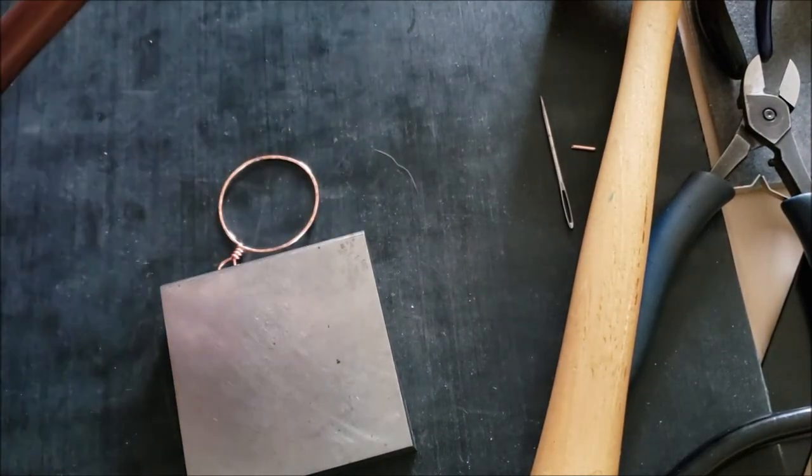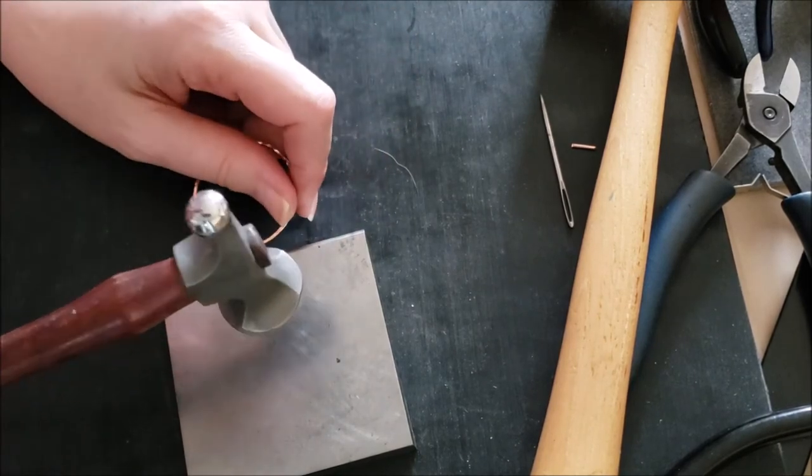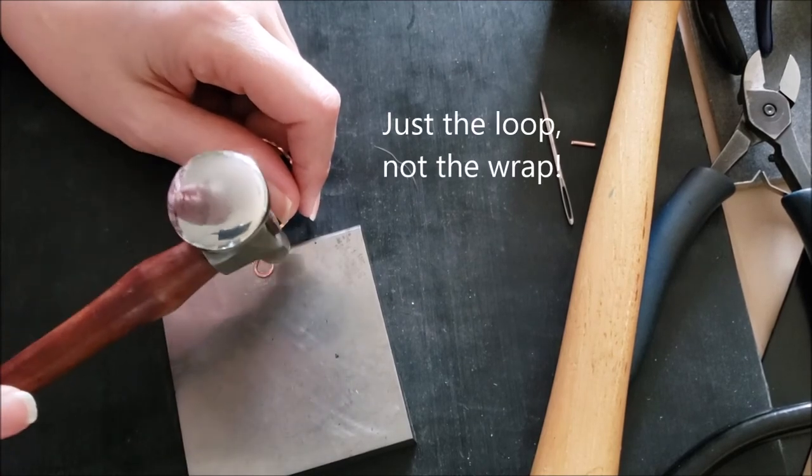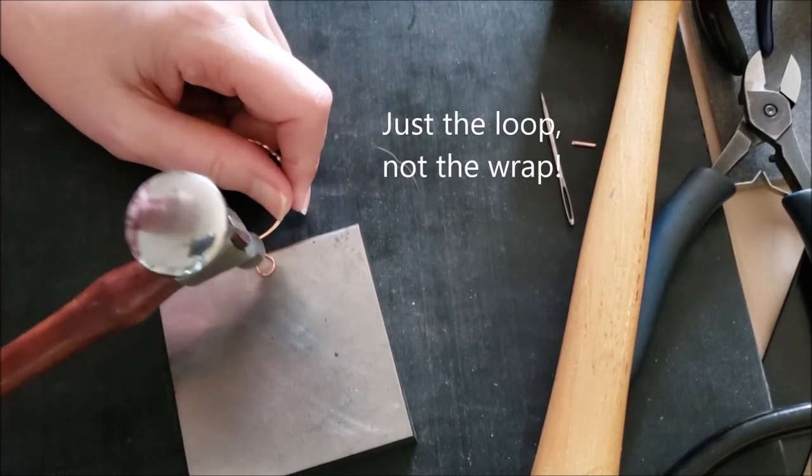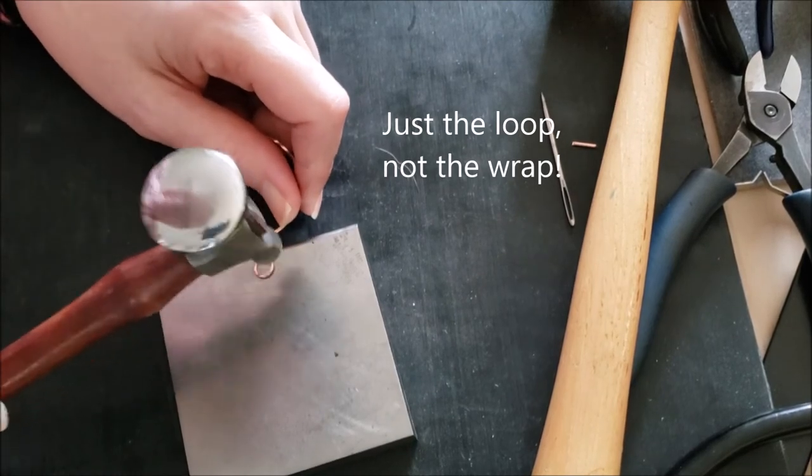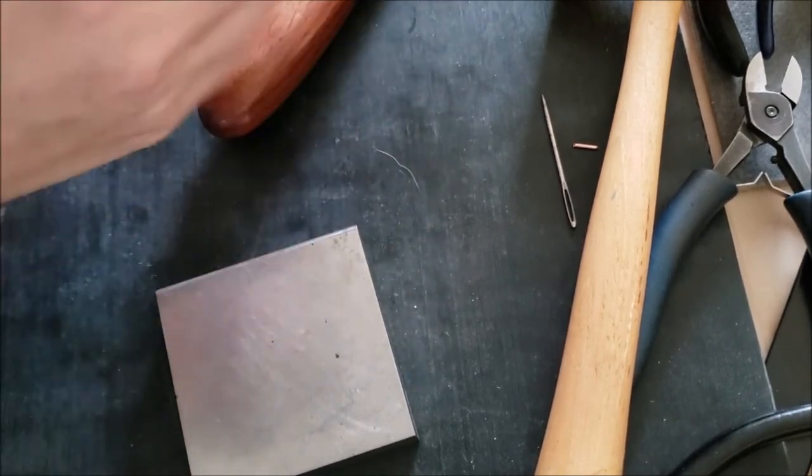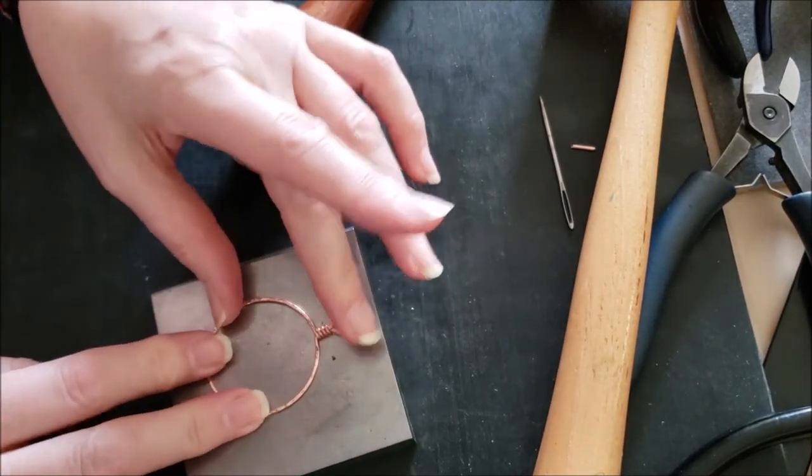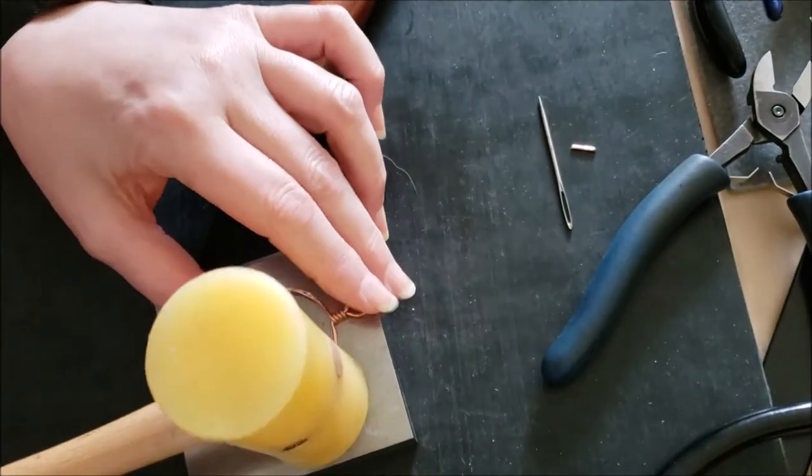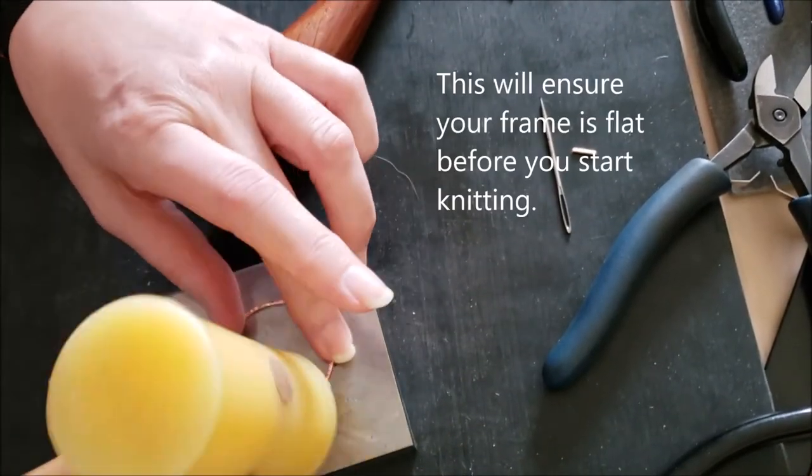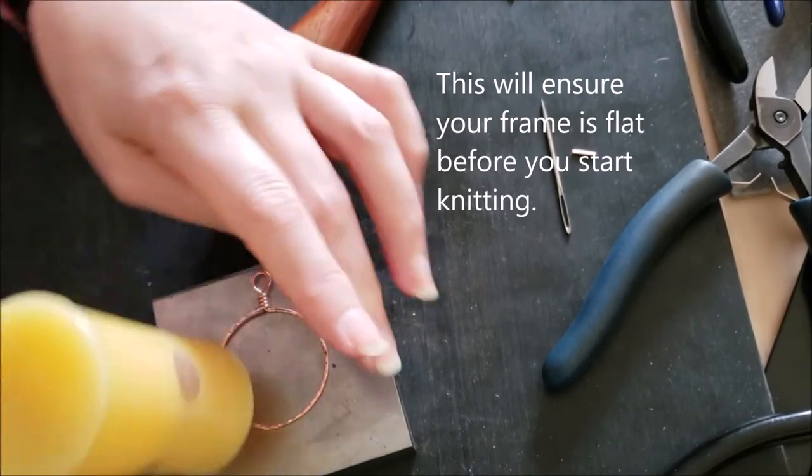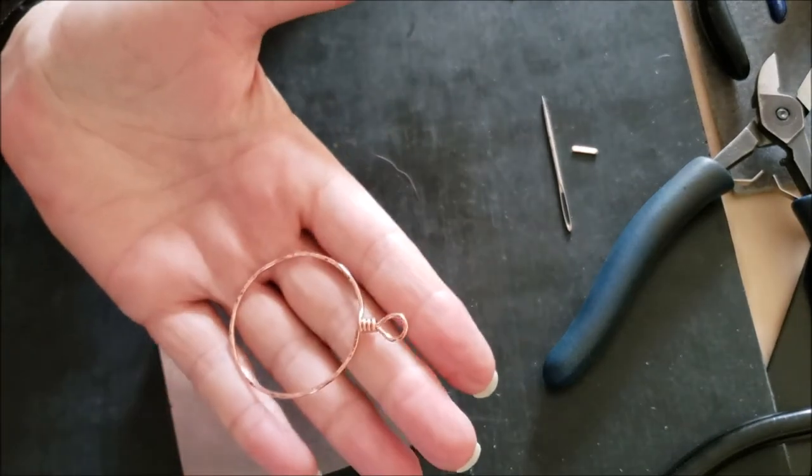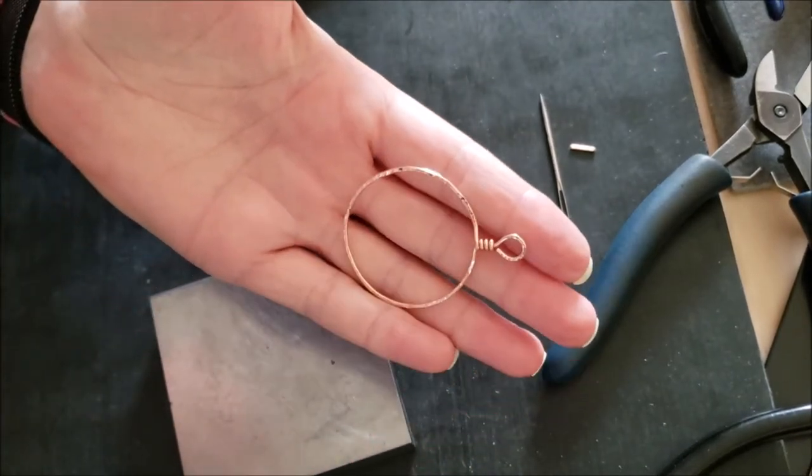Now I'm going to tap the bail to flatten it just a little bit, and I'm also going to give it a little bit of texture, just because I like that. Okay. Now take your plastic mallet again. And there you have a pendant frame that's ready to start knitting with. It's literally that simple.